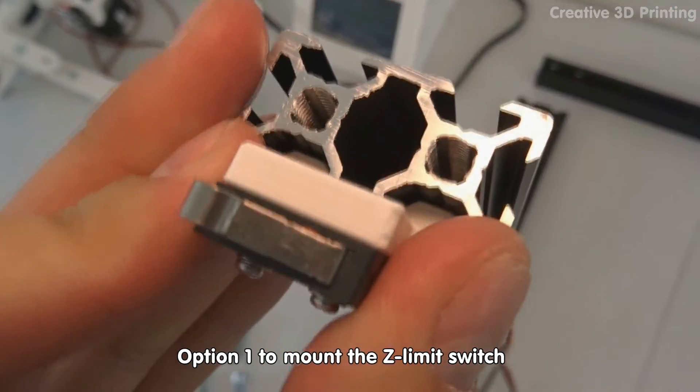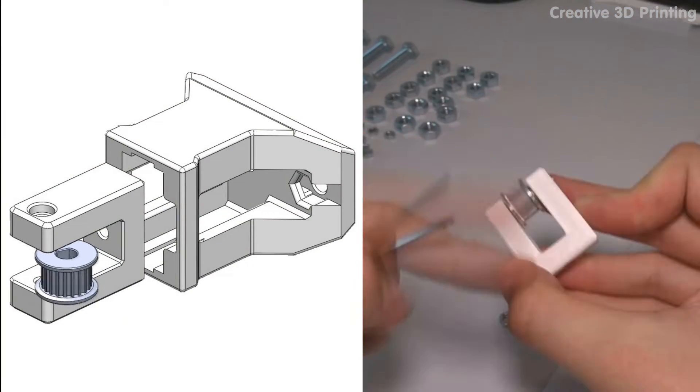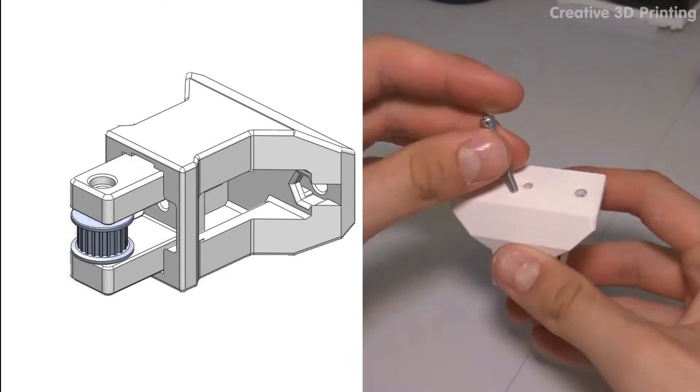Here you can see one option of how to mount the Z limit switch. I also make the Y belt tensioner and mount it on the other side.